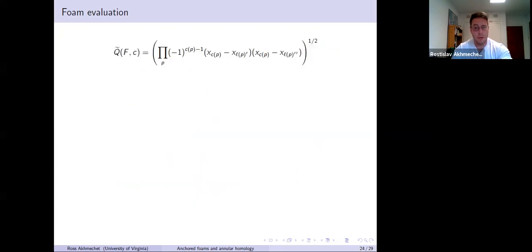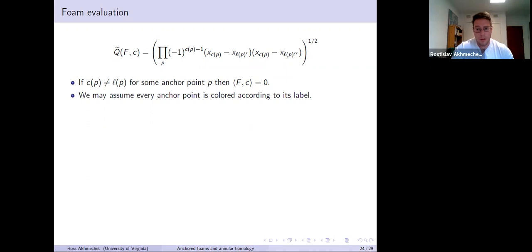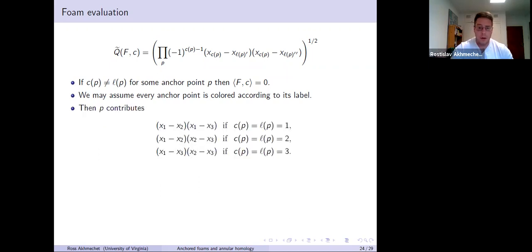Let me describe the square roots in this Q tilde a little bit more. Suppose you have this foam F and a coloring C, and suppose there's some anchor point P and the color of the point, meaning the color of the facet on which the point lies, is different from the label of that point, which the label is just fixed data from F. Then if you look under the square root for that anchor point, you're going to see a term that looks like X of C of P minus X of C of P. So this whole thing is going to be zero, and the evaluation for that coloring is also zero.